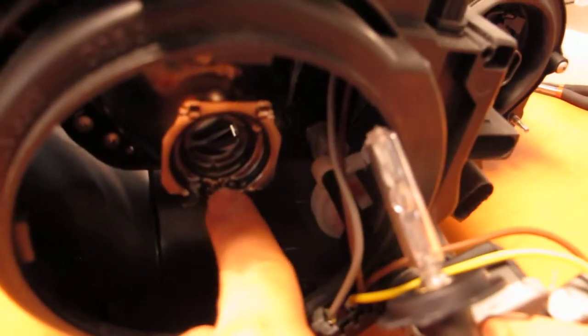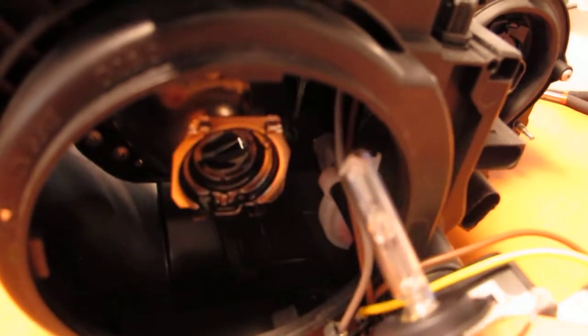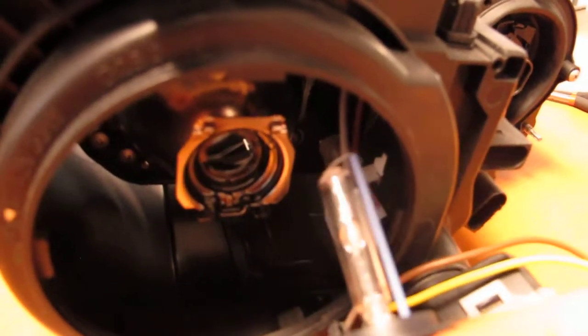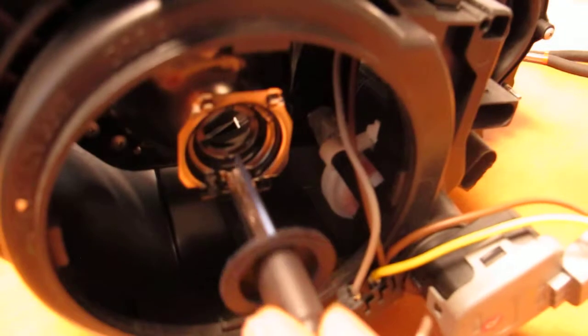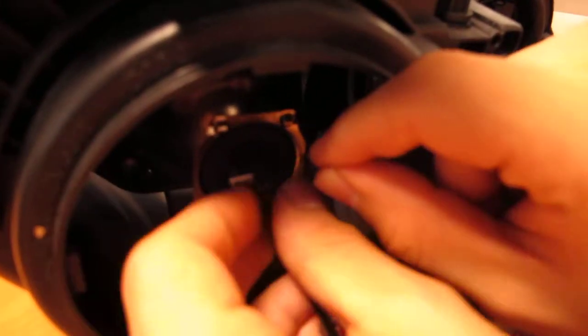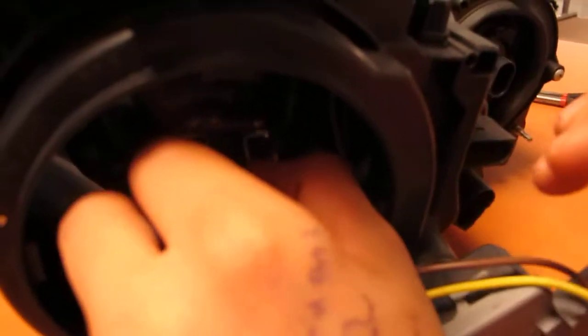If you notice that the H7 bulb has a notch, please be sure to position the notch the same position when plugging in the bulb so that the bulb can fit correctly into its housing. Once you have it positioned, you'll squeeze the clipping back so that it's in position.